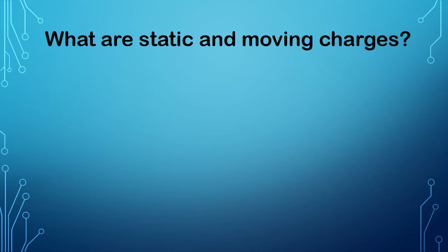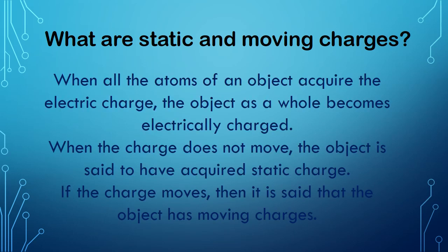What are static and moving charges? When all the atoms of an object acquire the electric charge, the object as a whole becomes electrically charged. When the charge does not move, the object is said to have acquired static charge. If the charge moves, then it is said that the object has moving charge. In short, we can say static charge which means they do not move. They are steady or stationary which means in one place.